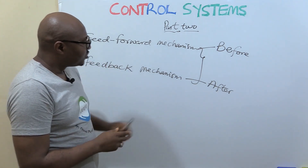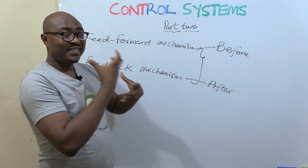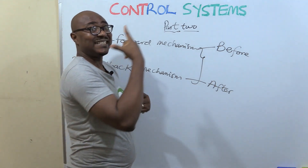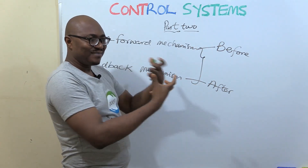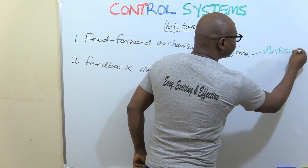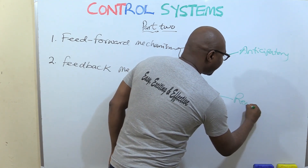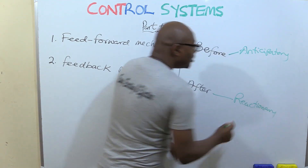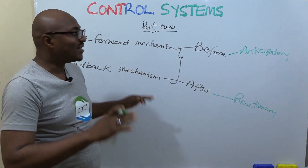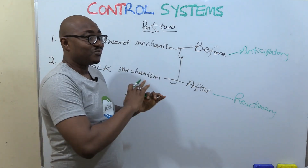The goal of feed forward is faster performance. It anticipates a change and begins to respond before it occurs, so it is anticipatory. Feedback, on the other hand, is reactionary — the change has already occurred and the system is now reacting to that change to correct it and bring about balance.